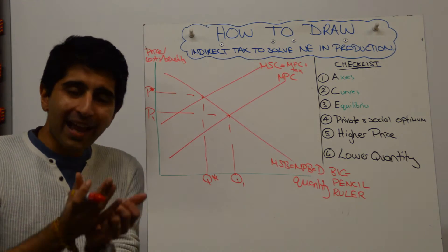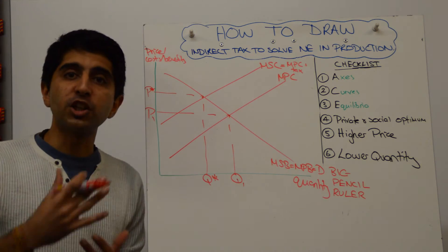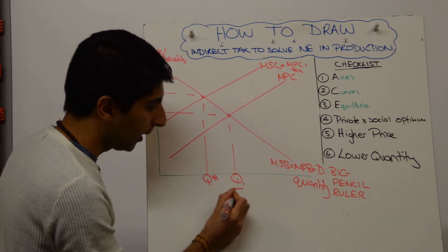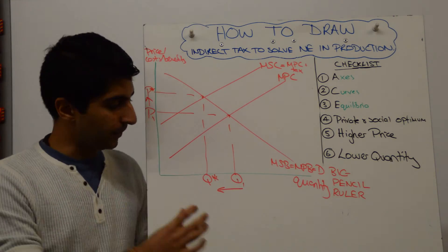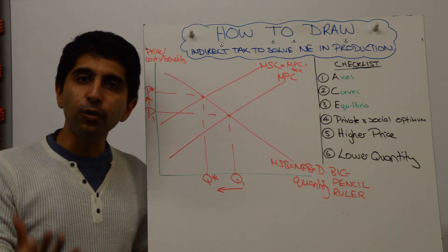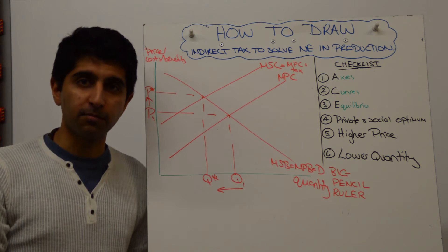But to show that a tax has been imposed and that there is a movement or a change in quantities and price, I'm going to draw these arrows. Now, these arrows are quite important, so always stick them on to show the examiner you know that there has been a change in quantity and a change in price.